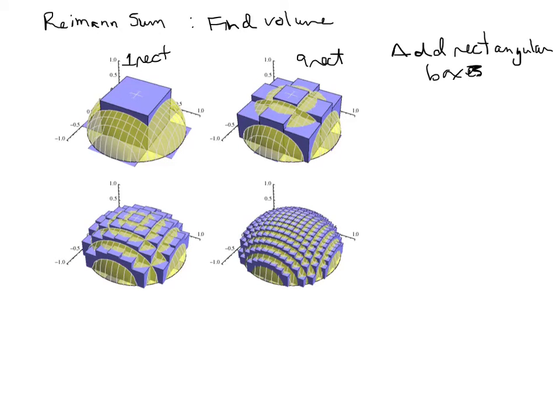So we're going to be adding up each rectangular box is going to have a base and we're going to multiply that by a height. The base is going to represent some length times a width.